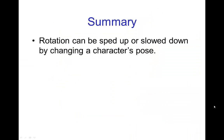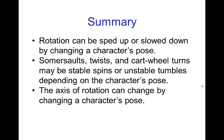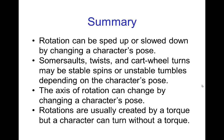So in summary: rotation can be sped up or slowed down by changing a character's pose. Somersaults, twists, and cartwheel turns may be stable spinning motion or unstable tumbling motion, and it all depends on the character's pose — gymnasts are very intuitively familiar with these different poses. The axis of rotation can change by changing a character's pose, like we saw with the diver going from a somersault to a somersault with a twist. And finally, rotations are usually created by applying a torque; however, a character can turn without torque, as we saw — the most advanced example being the cat turning around to land on its feet.